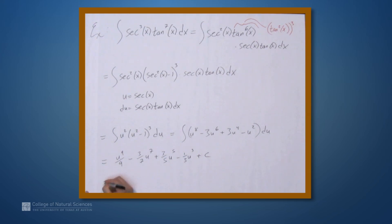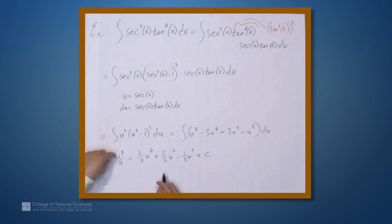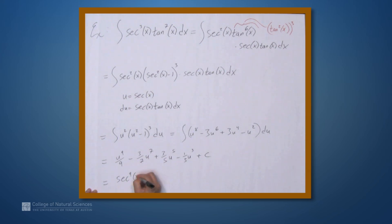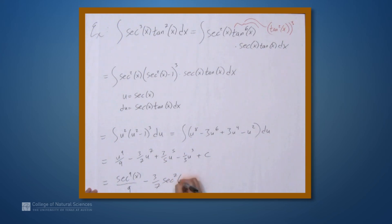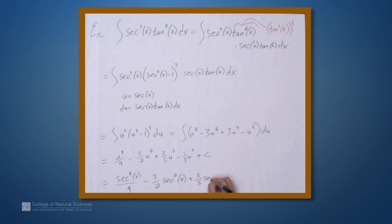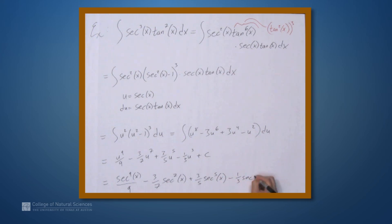Finally, substituting secant x back in for u, we get sec⁹x/9 - (3/7)sec⁷x + (3/5)sec⁵x - (1/3)sec³x plus C.